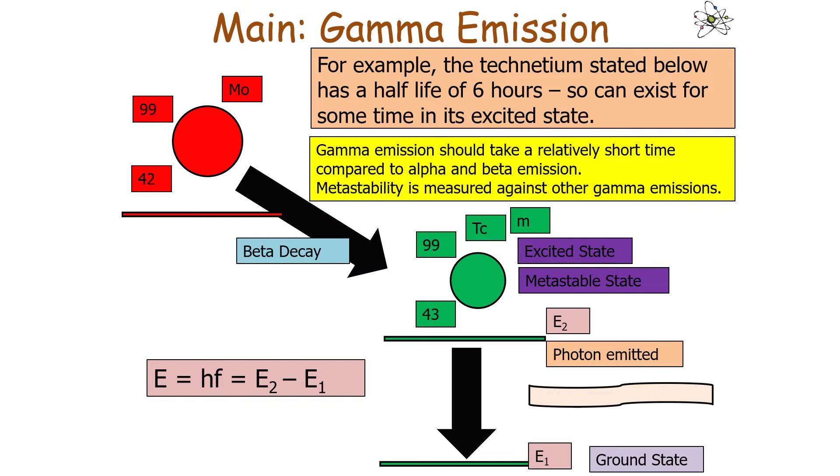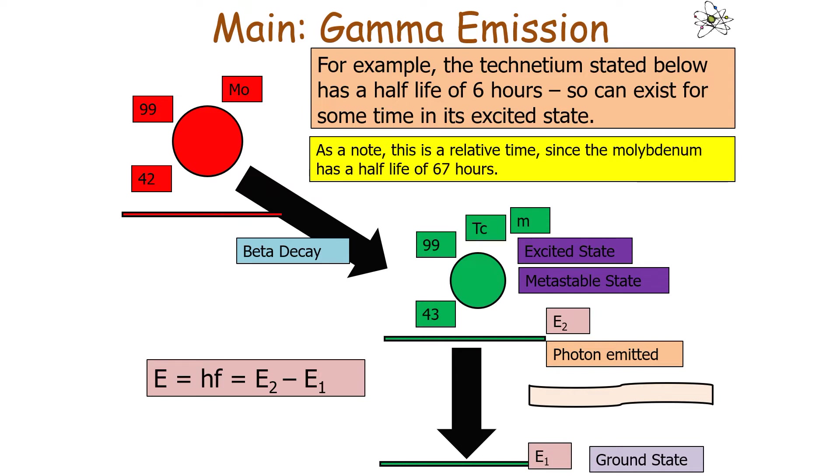Gamma emission should take a relatively short time to occur compared to alpha and beta emission, so metastability is measured against other gamma emissions. It's all relative, because whilst it would exist in a metastable state for 6 hours, the molybdenum has a half-life of 67 hours.